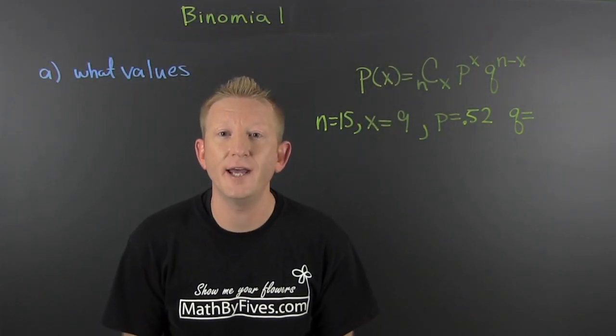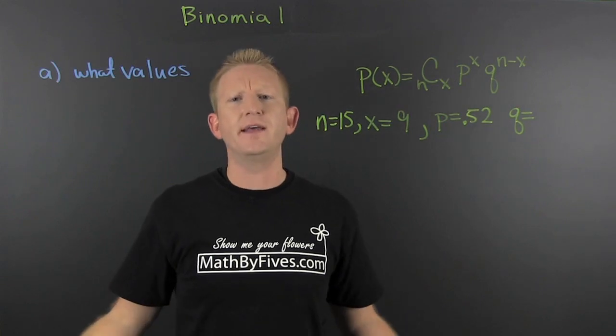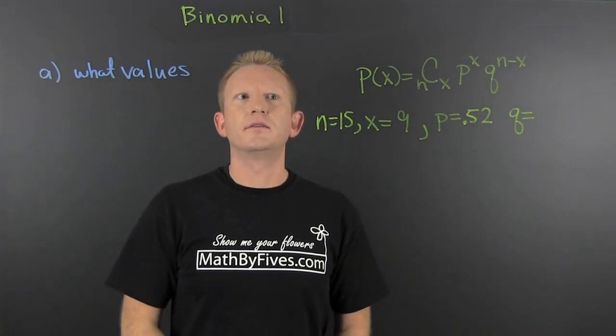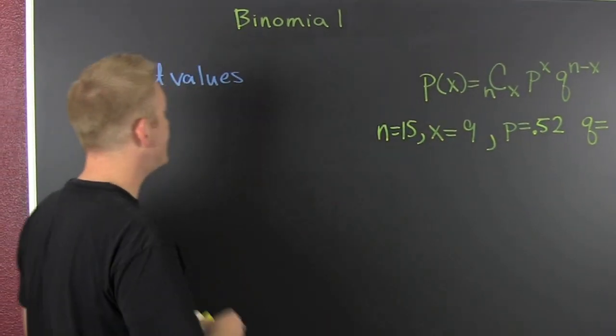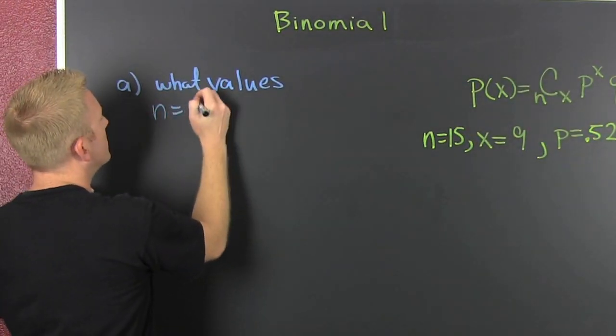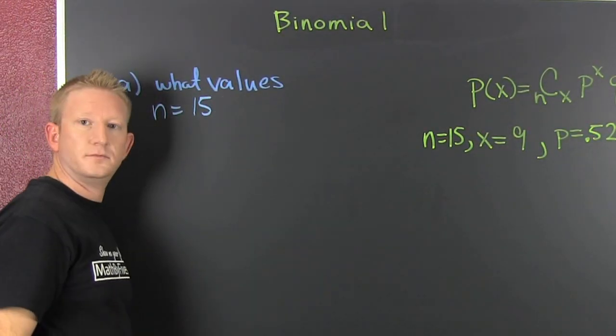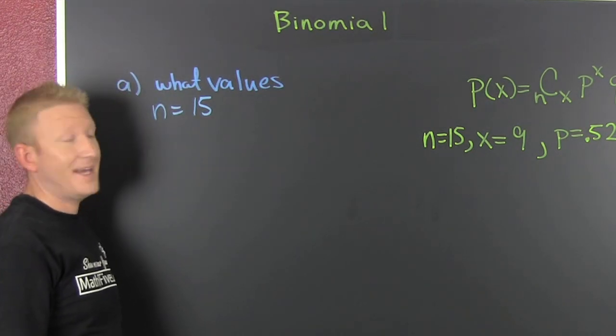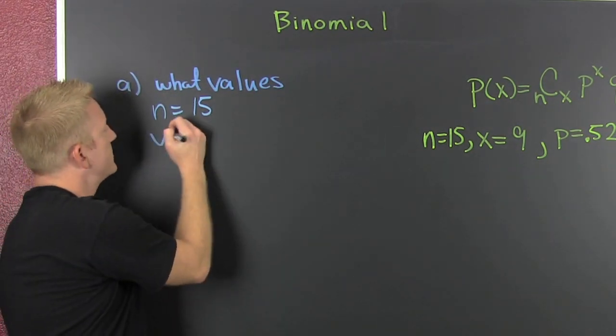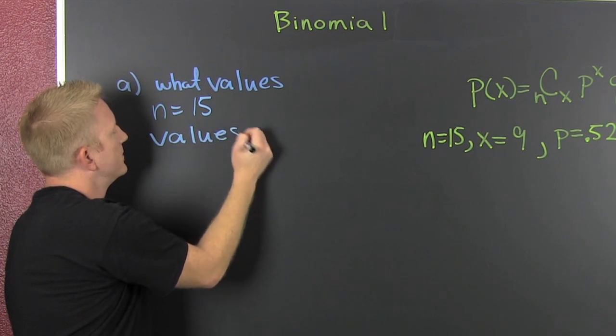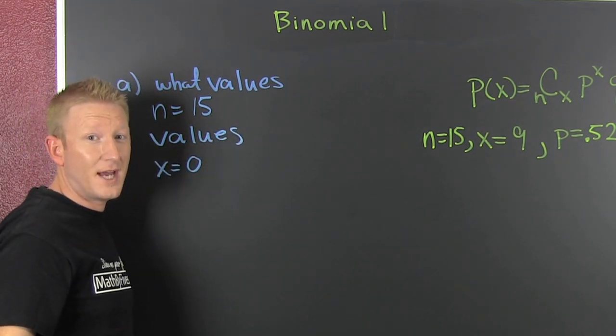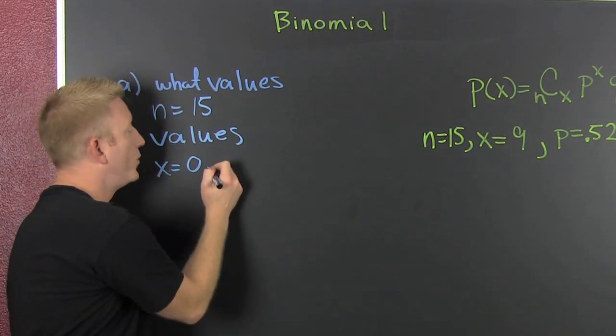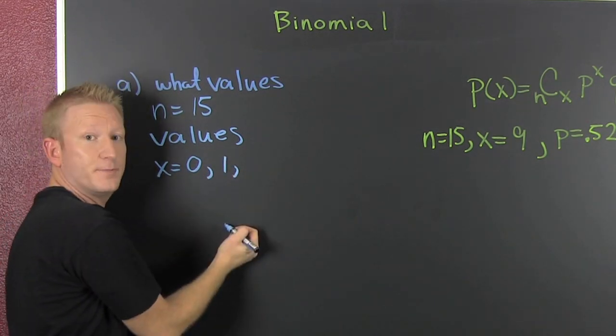In part A, they ask what values can the outcomes take on? Well, there's 15 in our sample. And the values are X can equal 0 because none of them can have a Facebook account, or one of them can, or two of them can.